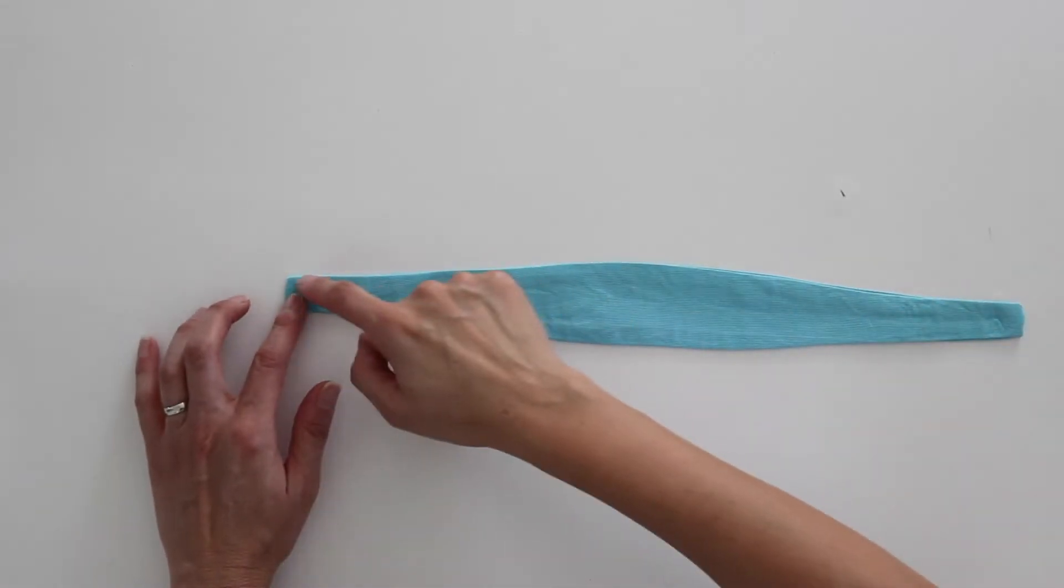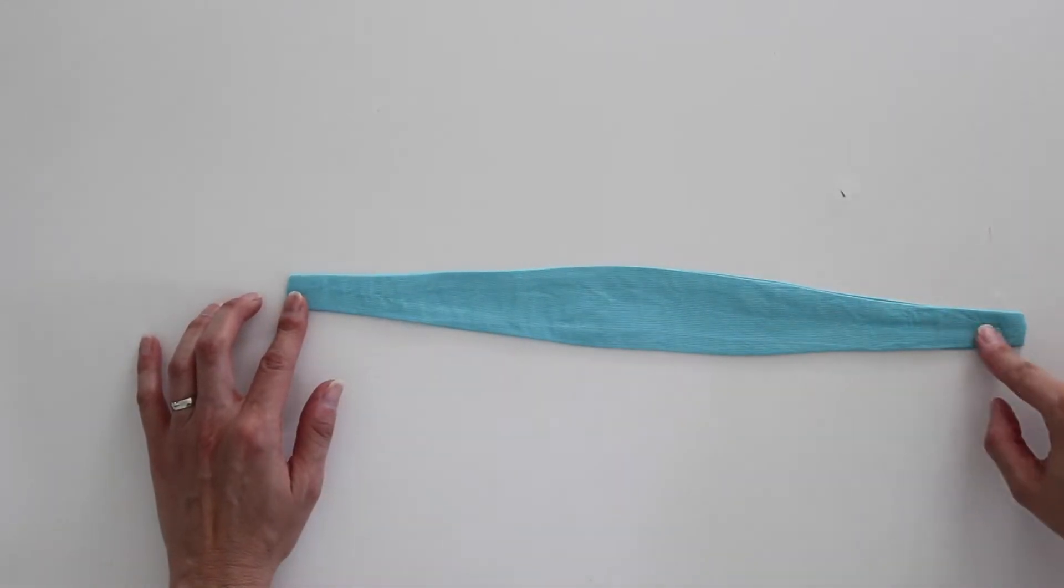The next step, once you've pressed this, is I've gone ahead and pressed one already and here's what it looks like. You're going to want to top stitch down the two long ends.